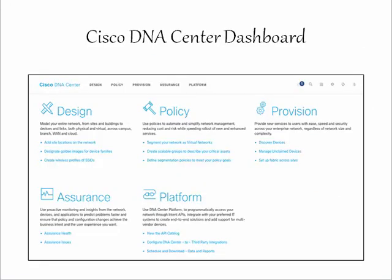The DNA Center dashboard is made up of five key areas, which will be covered in a series of separate videos. In a nutshell: Design, which you can use to design your network; Policy, where you can apply security policies to your devices and other resources; Provision, which you can use for device deployment; Assurance, which provides the ability to view devices, users, and applications and monitor and troubleshoot them; and Platform, where you have the ability to integrate with other applications using documented APIs and SDKs, and write Python programs.